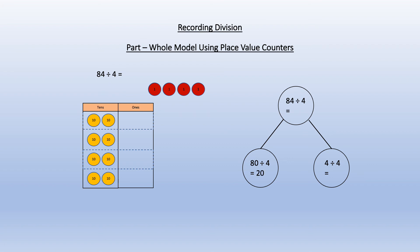I can see that each of the four sections has two tens counters in making 20. So 80 divided by 4 equals 20 and we can write that in the bottom left circle. Then we do exactly the same for the ones. There is one red counter in each section. And we can see that 4 divided by 4 equals 1 and we can write that in the bottom right hand circle.